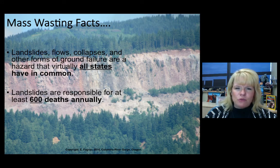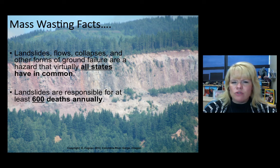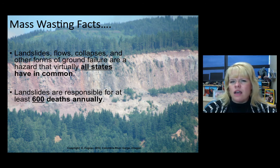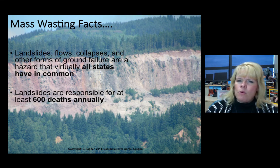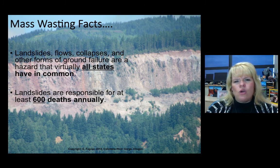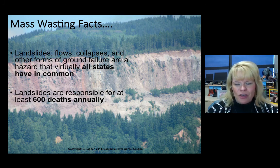A few more facts about mass wasting: landslides happen all over the world and unfortunately every state is prone to some form — whether it's ground failure, creeps, earth flows, rock slides, or lahars. Landslides claim at least 600 lives annually across the world. This is a big landslide site around the Columbia River Gorge. We know there are places more prone to it, and we can take precautions by putting in best management practices and maintaining them in order to protect human health and the environment.